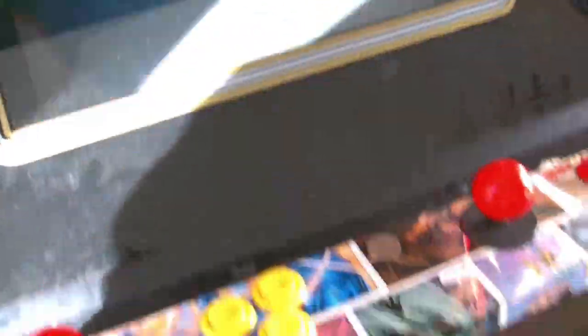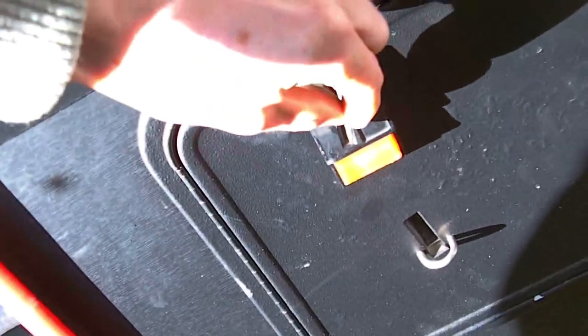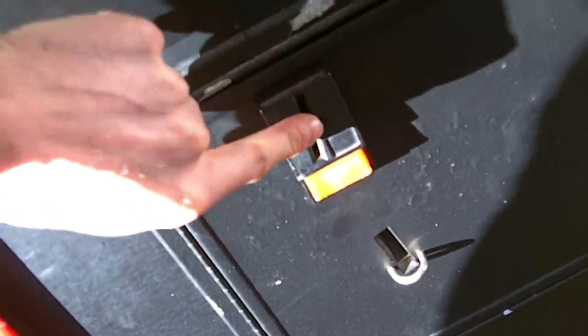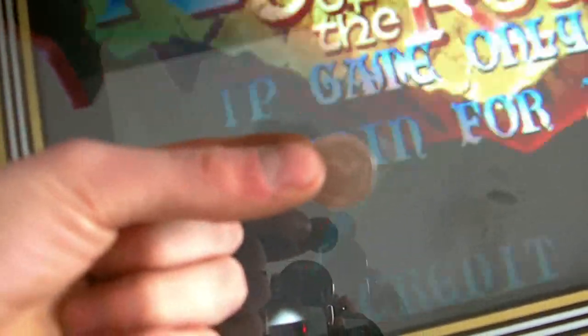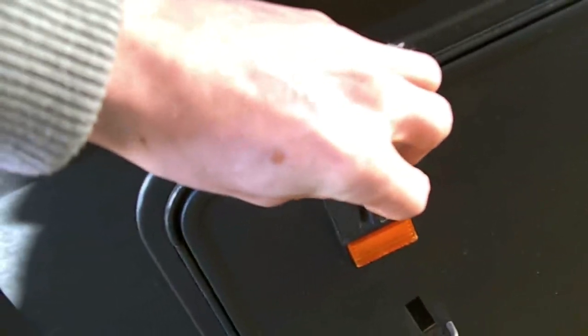So we'll just put our coin in, ten pence, and there you go, one credit has registered. Okay, we'll put 20 pence in this time. There you go, we're now up to three credits because mine's set for every ten pence you get a credit.